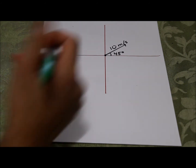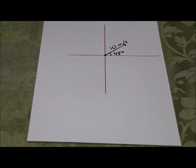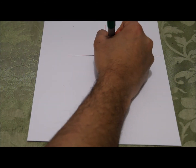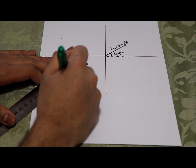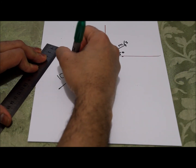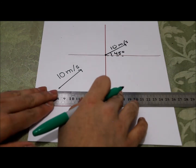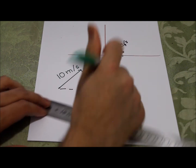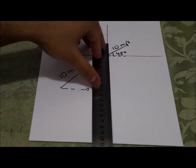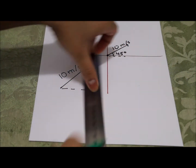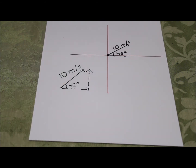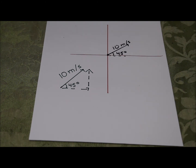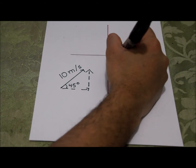What you do is draw a right triangle, using dashed lines to show the x and y components. Let's draw this outside the coordinate plane: we have 10 meters per second as the hypotenuse, the x component along the base, the y component going up, and the angle is 45 degrees. In order to break it into its individual components, it's very important to know how to use basic trigonometry — specifically SOH-CAH-TOA.